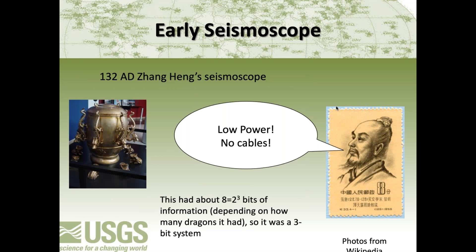Very briefly, we can say that observational seismology started around 132 AD with Zhang Heng's seismoscopes. It had dragons, and a ball would drop out of the dragon's mouth into the frog's mouth, indicating the direction of an earthquake. With roughly eight different states, we can say that's two to the three bits — about three bits of information from this seismometer. We'll use this quantity to compare to newer instrumentation.